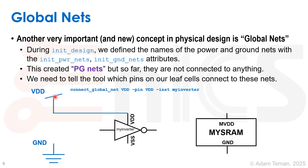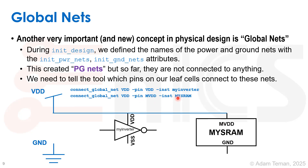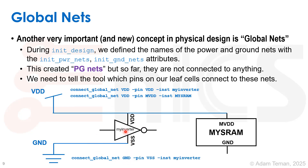The command 'connect_global_net VDD -pin VDD -inst my_inverter' connects the global VDD net to the VDD pin on instance my_inverter. For my_SRAM where the pin is called mVDD, we use 'connect_global_net VDD -pin mVDD -inst my_SRAM', causing global net VDD to also connect to my_SRAM's mVDD pin. Similarly for ground: 'connect_global_net ground -pin VSS -inst my_inverter' and 'connect_global_net ground -pin GND -inst my_SRAM'. These connect_global_net commands are very important to run.